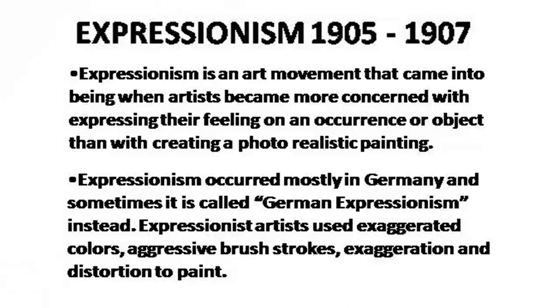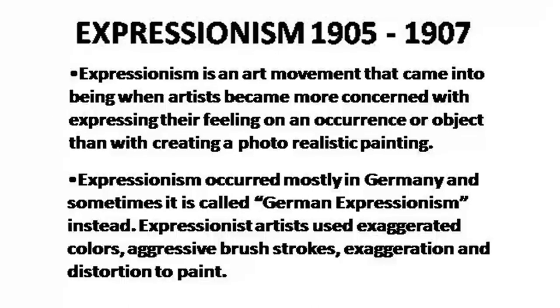In terms of the movement, it started around 1905 and 1907 and it went on for more than a decade. Expressionism can be defined as an art movement that came into being when artists became more concerned with expressing their feelings about an occurrence or object than with creating a photo-realistic painting. But Expressionism as a movement occurred mostly in Germany and is sometimes called German Expressionism because it has a very specific socio-political context.